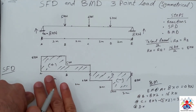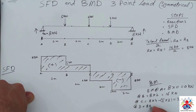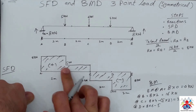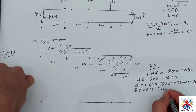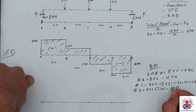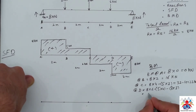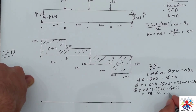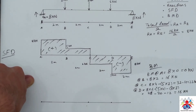Bending moment at point D: considering everything from point A — 8 multiplied by 6, minus 5 multiplied by 4, minus 6 multiplied by 2. That gives 48 minus 20 minus 12, which equals 16 kilonewton·meters.